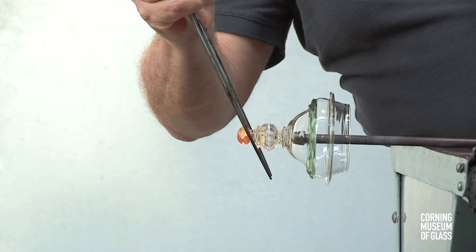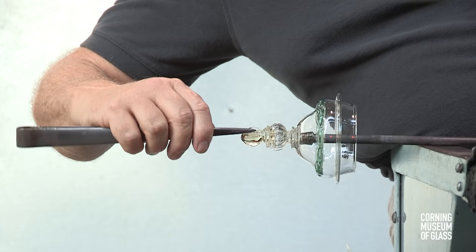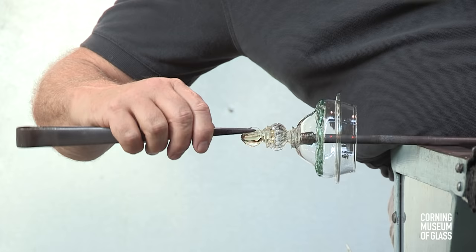The jacks are used to create a spindle shape and the pincers used to create what is often called a propeller finial. A tiny amount of glass is added to the end for the very topmost part of the finial.